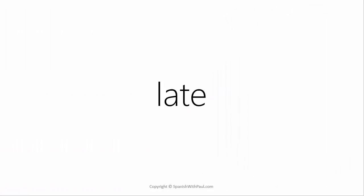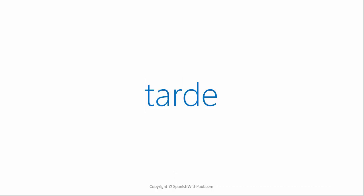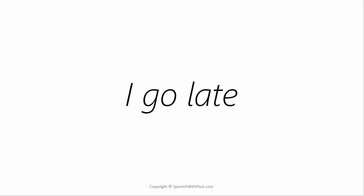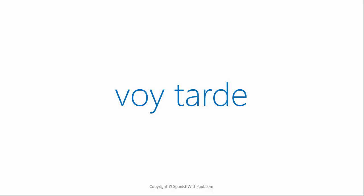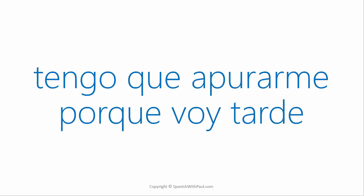The word for 'late' in Spanish is 'tarde' — two syllables: tar and de. Tarde. Now to express 'I'm late,' what they literally say is 'I go late': voy tarde. Let's use it. How would you say 'I have to hurry up because I'm late'? Tengo que apurarme porque voy tarde.